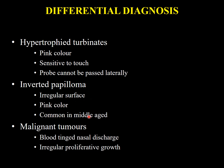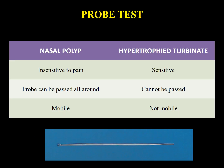A papilloma will have an irregular surface, is also pink, and is usually present in middle-aged patients. A malignant tumor is another differential — there will be a history of blood-tinged nasal discharge and the growth will be irregular and pink. On probe test using the Jobson Horne probe: the polyp is insensitive to pain but the turbinate is sensitive. The polyp is mobile while the hypertrophic turbinate is not.